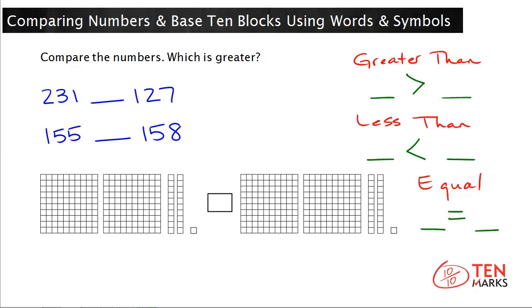Now let's look at some problems together. Here's the first problem. You have 231 on the left and 127 on the right. Before we think about which number is greater, let's talk about the steps. When you have a three-digit number, you begin by comparing the greatest place value. For a three-digit number, the greatest place value is the hundreds place.